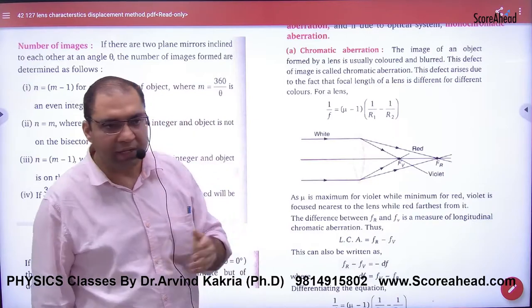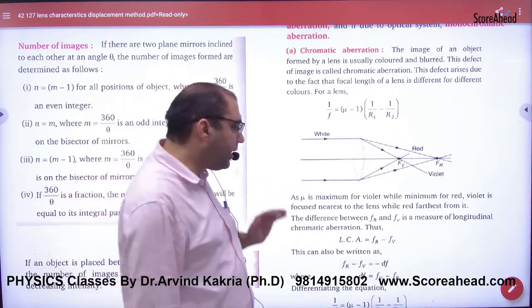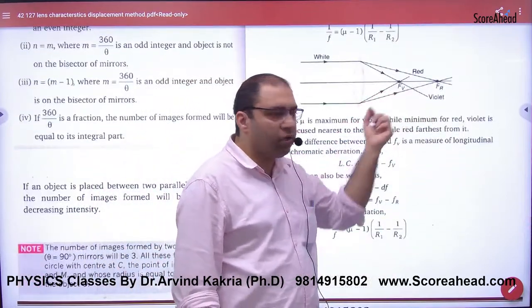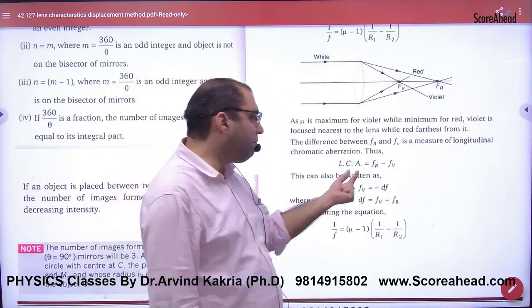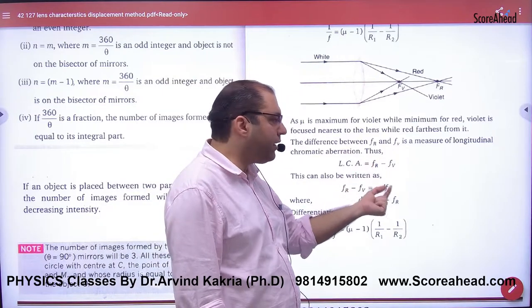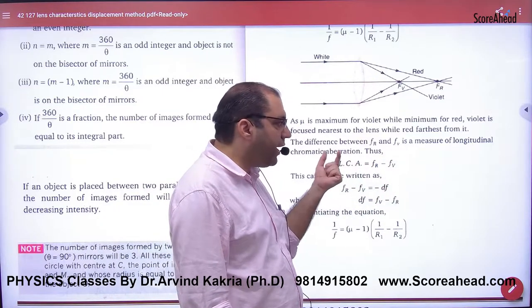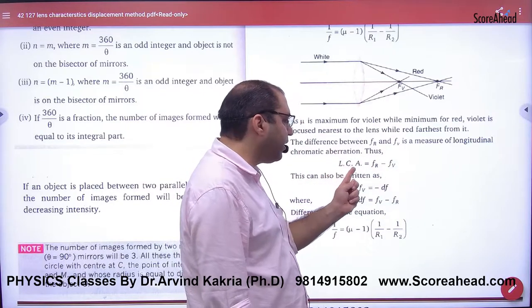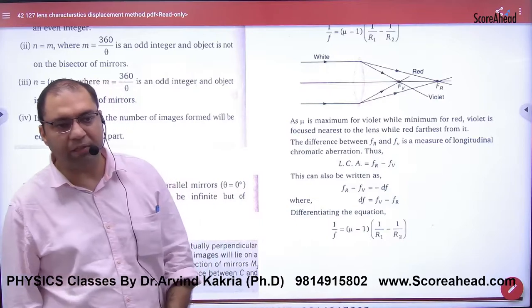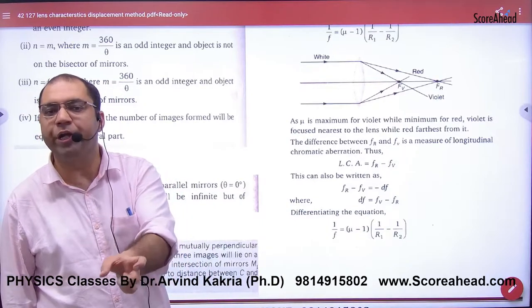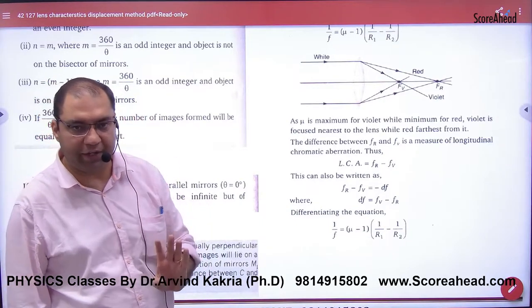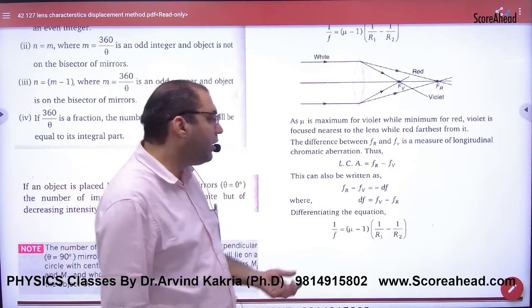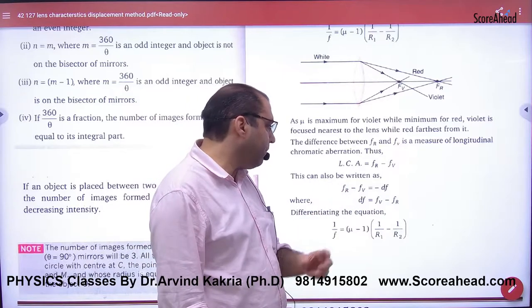But this is a defect. When multiple colors have different focal lengths, red focal length minus violet focal length gives the difference. This is called LCA - Longitudinal Chromatic Aberration. LCA means the difference in focal length. In both focal lengths there is a difference which didn't need to happen, but the difference came.